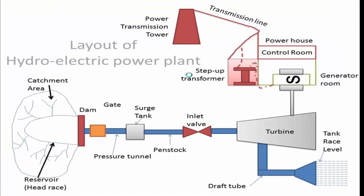Here is one more brief layout of the Hydel Power Plant. As I mentioned, we have a catchment area where the water will be stored. This is a reservoir. In this catchment area, the water will be stored in the reservoir. If we need to block the flow, we will use the dam.